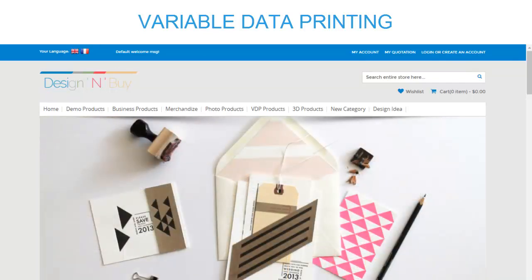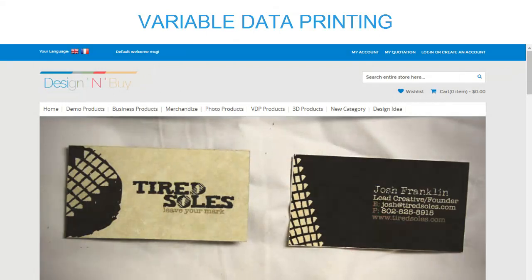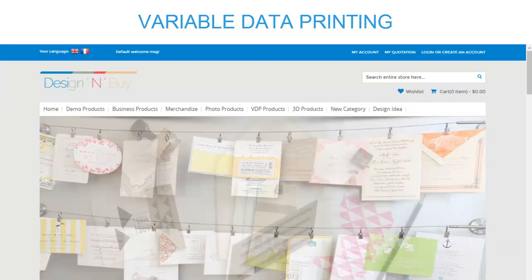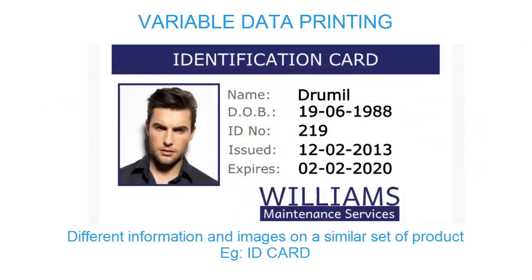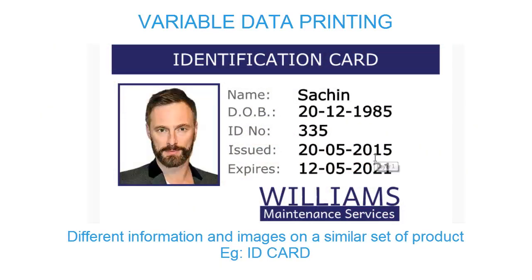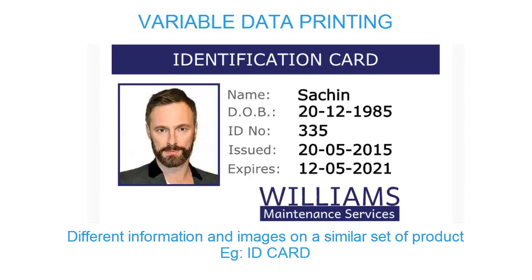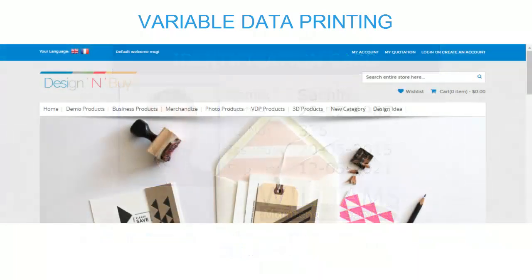Variable Data Printing is a form of digital printing in which elements such as text, graphics, and images may be changed from one printed piece to the next without stopping or slowing down the process, and the information can be used from a database or an external file.